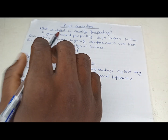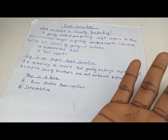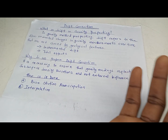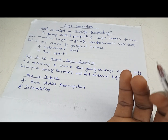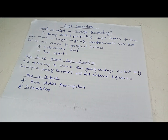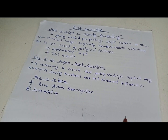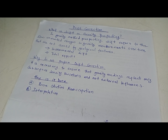If you ask yourself, what is drift in gravity prospecting? In gravity method prospecting, drift refers to the slow unwanted changes in gravity measurements over time that are not caused by geologic features. What that simply means is that when you use a gravity meter in the field, you are reading the density contrast in the subsurface.